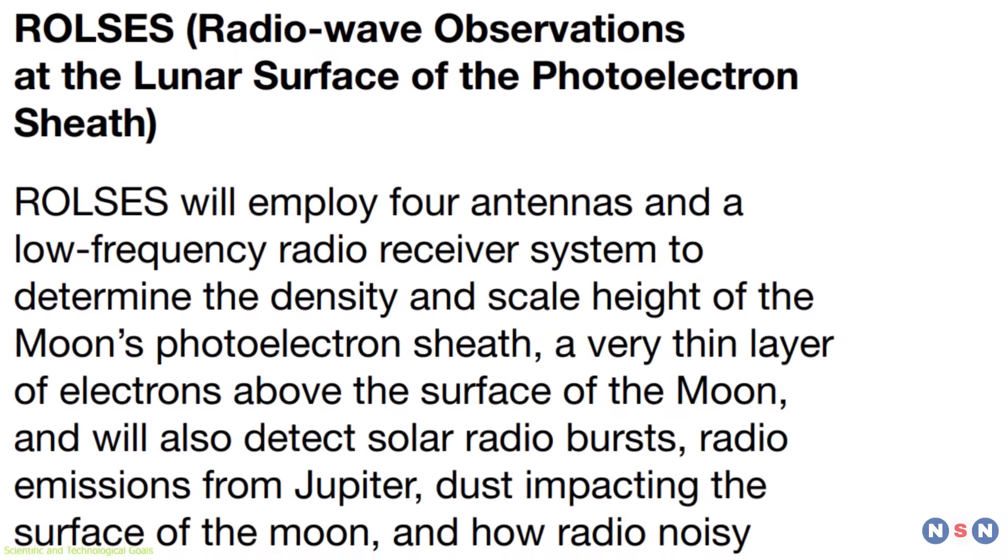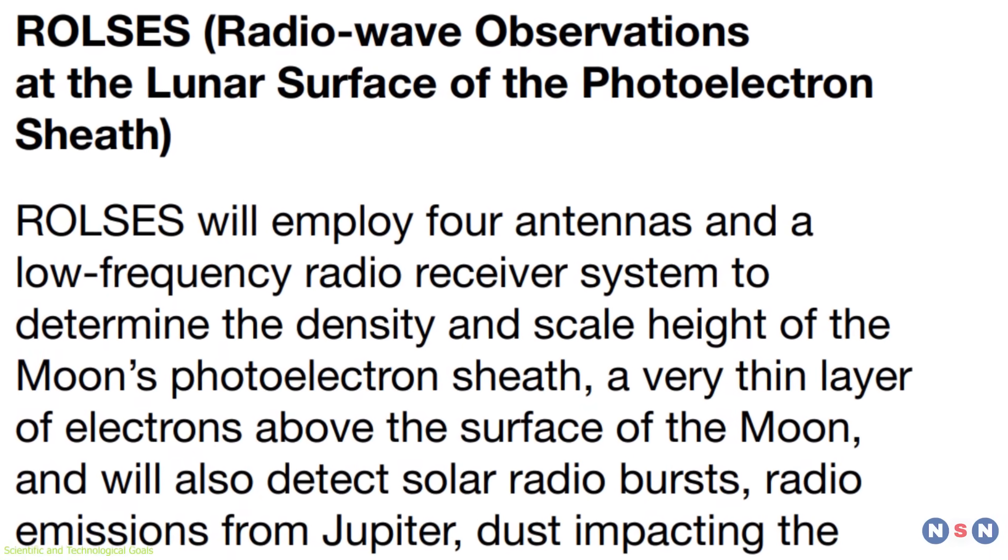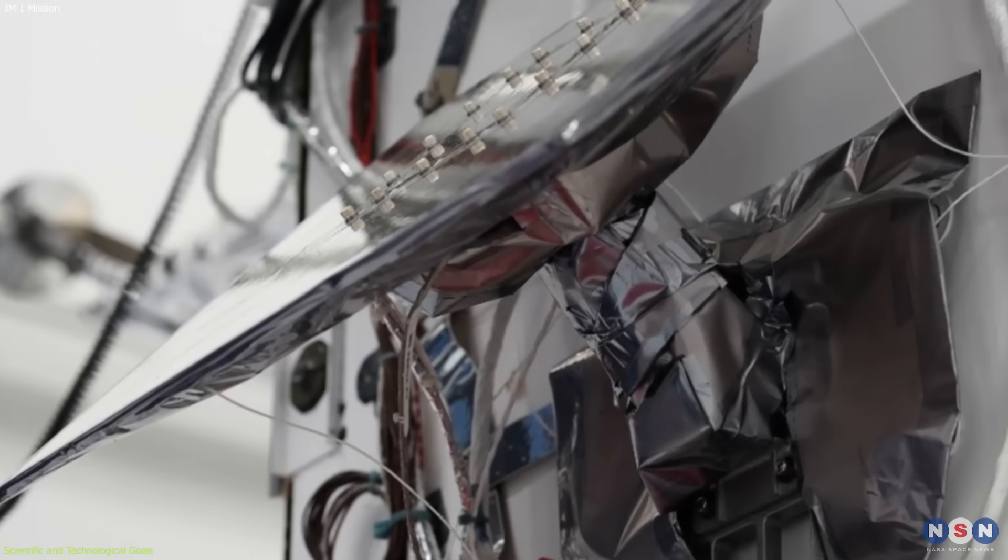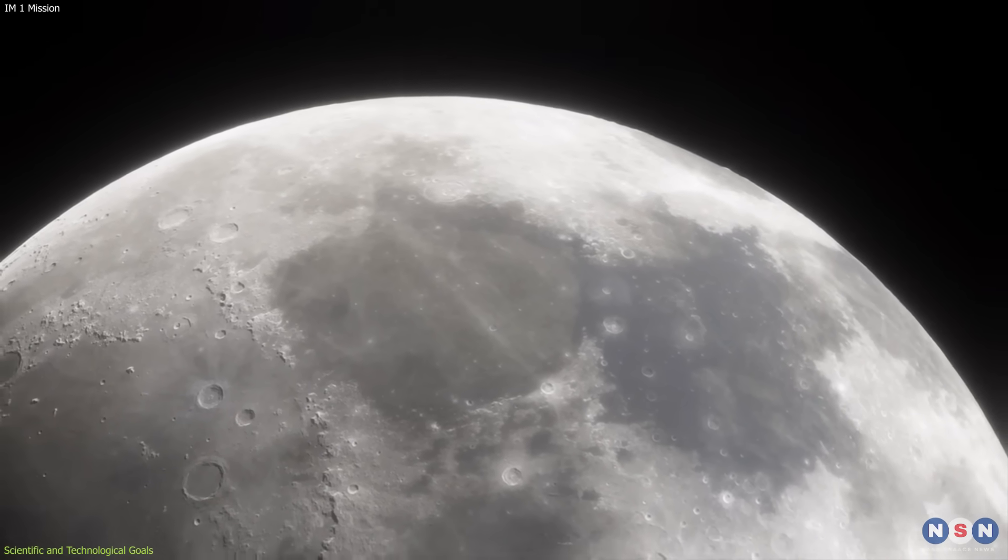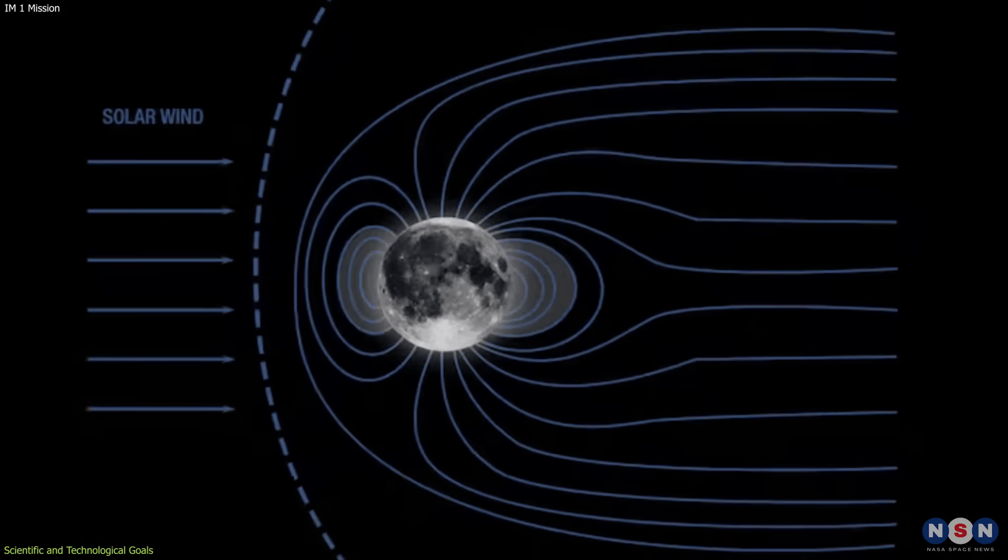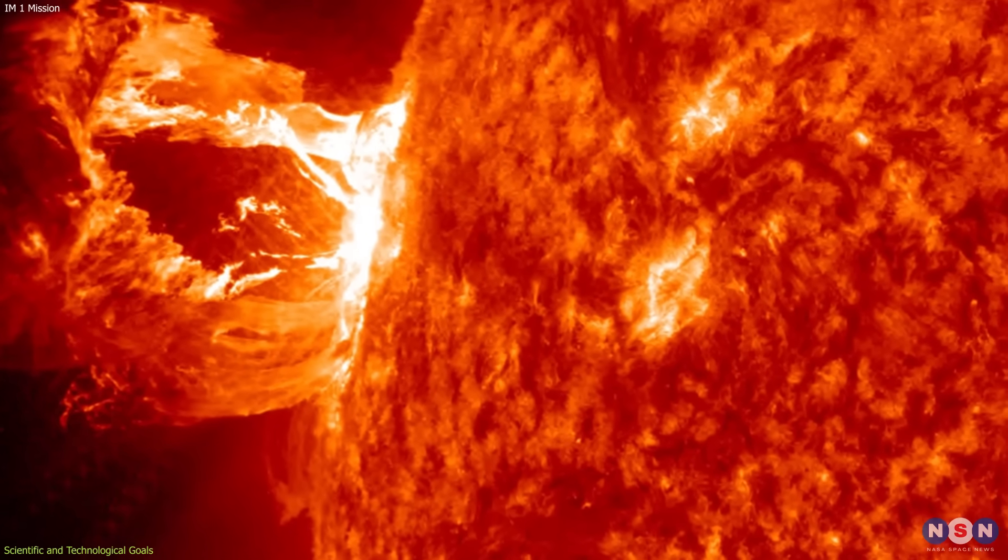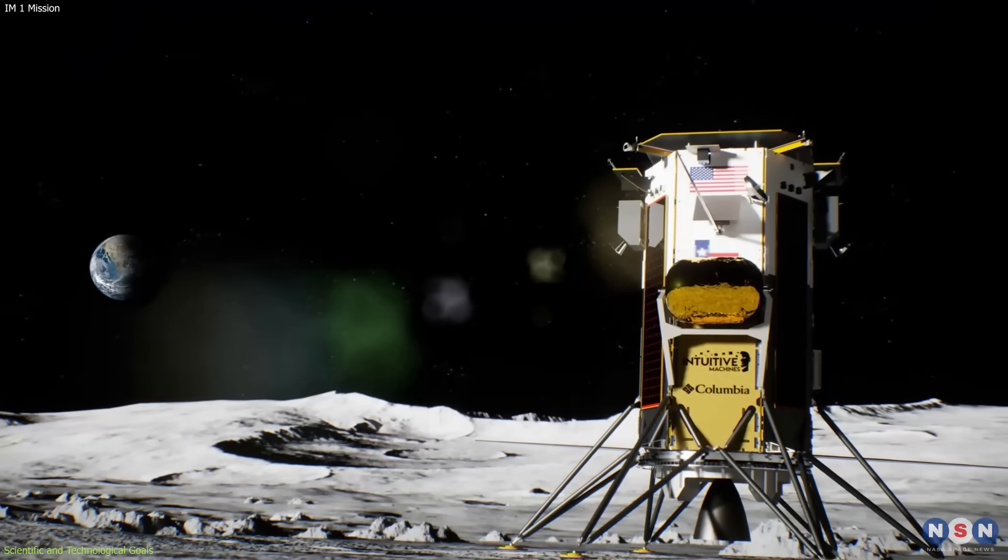The third payload that the lander will have onboard is ROLSES, or Radio Wave Observations at the Lunar Surface of the Photo Electron Sheet, a suite of instruments that will measure the space weather and lunar surface interactions, such as plasma, electric fields, and magnetic fields. It will also study the effects of solar storms and cosmic rays on the lunar environment and the lander's electronics.